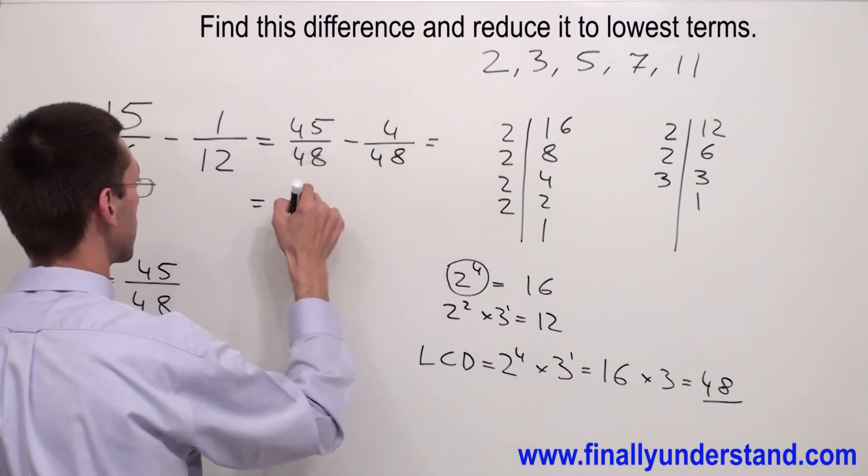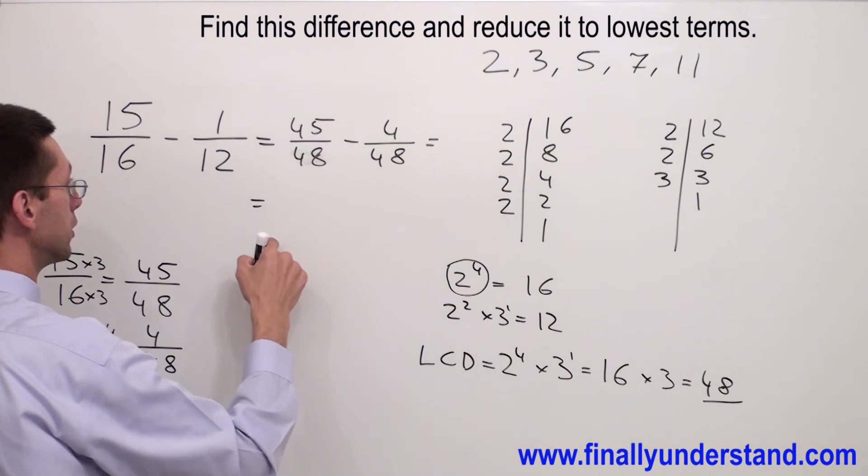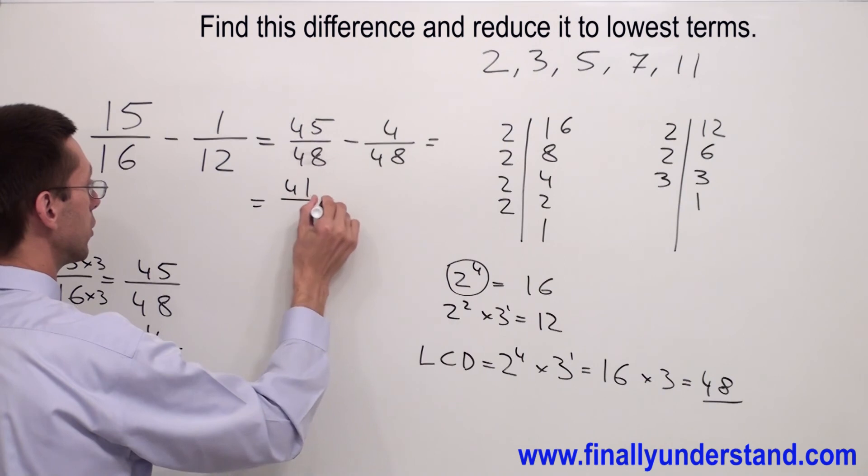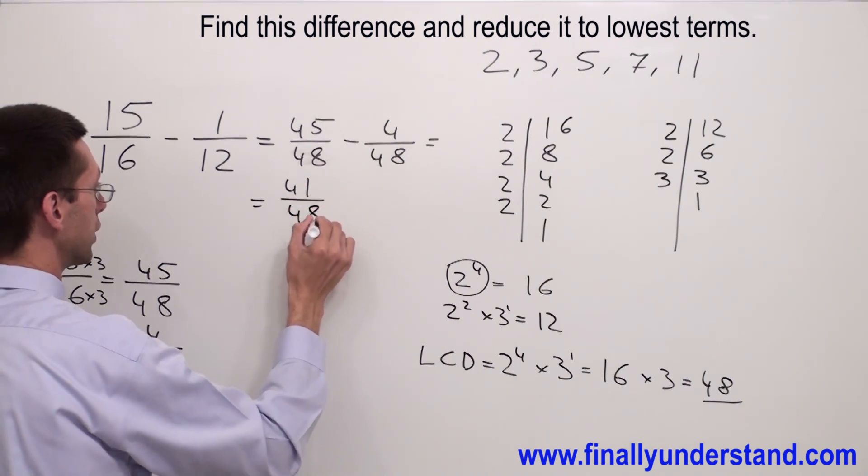I got the common denominator. I can subtract the numerators. 45 minus 4 is 41 over 48.